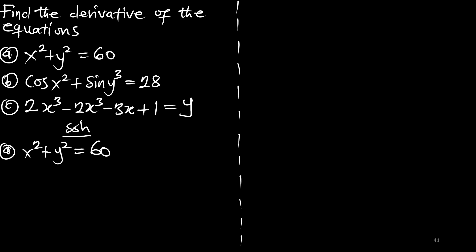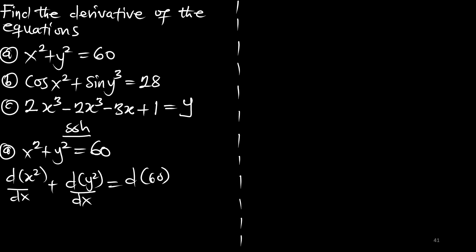We apply d/dx to x squared plus d/dx to y squared, and that should equal d/dx of 60. Differentiating x squared with respect to x gives us 2x. Differentiating y squared with respect to x gives 2y, but since we are differentiating with respect to x and the variable is y, we add another derivative dy/dx. The derivative of the constant 60 is 0.